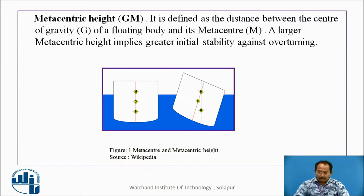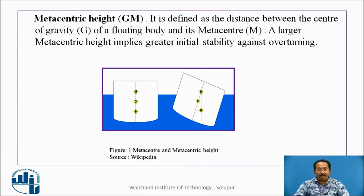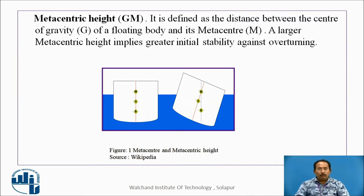A larger metacentric height implies greater initial stability against overturning. There are three stability or equilibrium conditions: stable, unstable, and neutral. We will find these through problems.